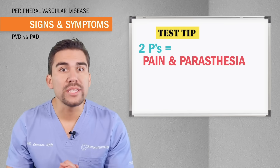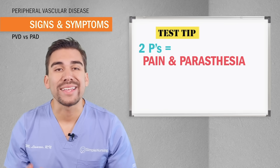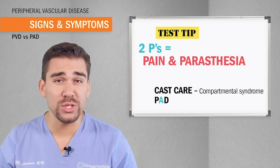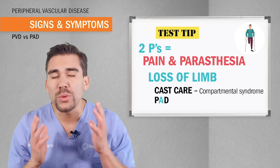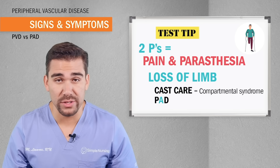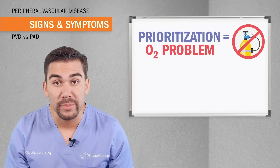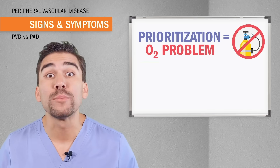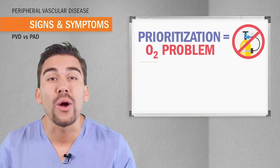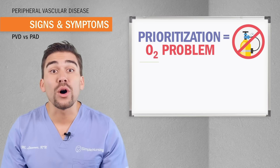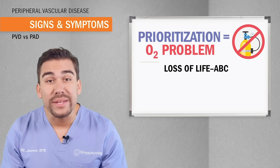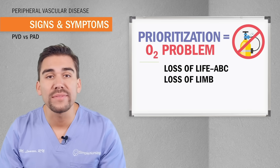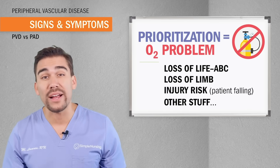These two Ps are always the priority and will always show up on exams, even for PAD. In both cases we have an oxygenation problem leading to a loss of limb problem. We always think of the worst case scenarios, which revolve around oxygen problems. Any oxygen problem is an emergency and is always a priority. That's why the ABCs — airway, breathing, circulation — are always assessed first, then loss of limb, then risk factors and other concerns.